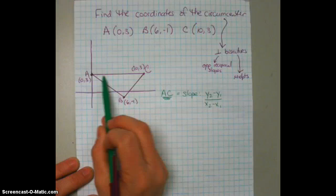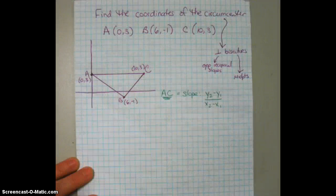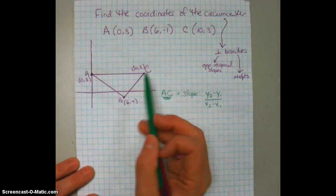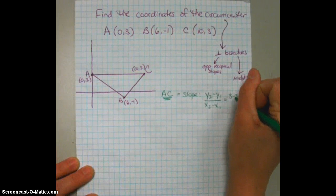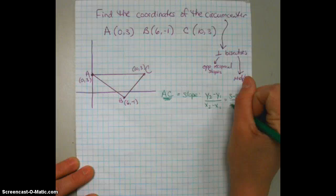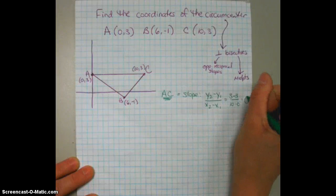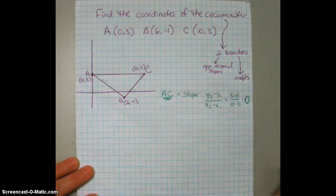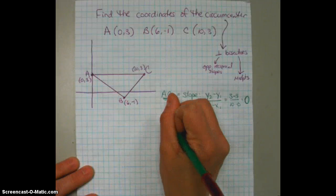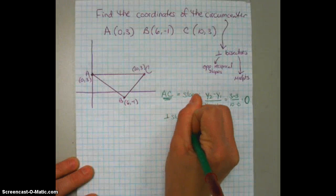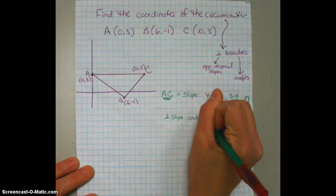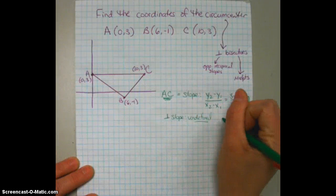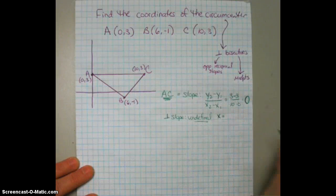And if you know already the slope of a horizontal line, that's 0. But let's say you don't remember that, and you're going to substitute in your values. So that's going to be 3 minus 3 over 10 minus 0, which we know is 0. So the opposite reciprocal, the perpendicular slope for the perpendicular bisector, is going to be undefined.